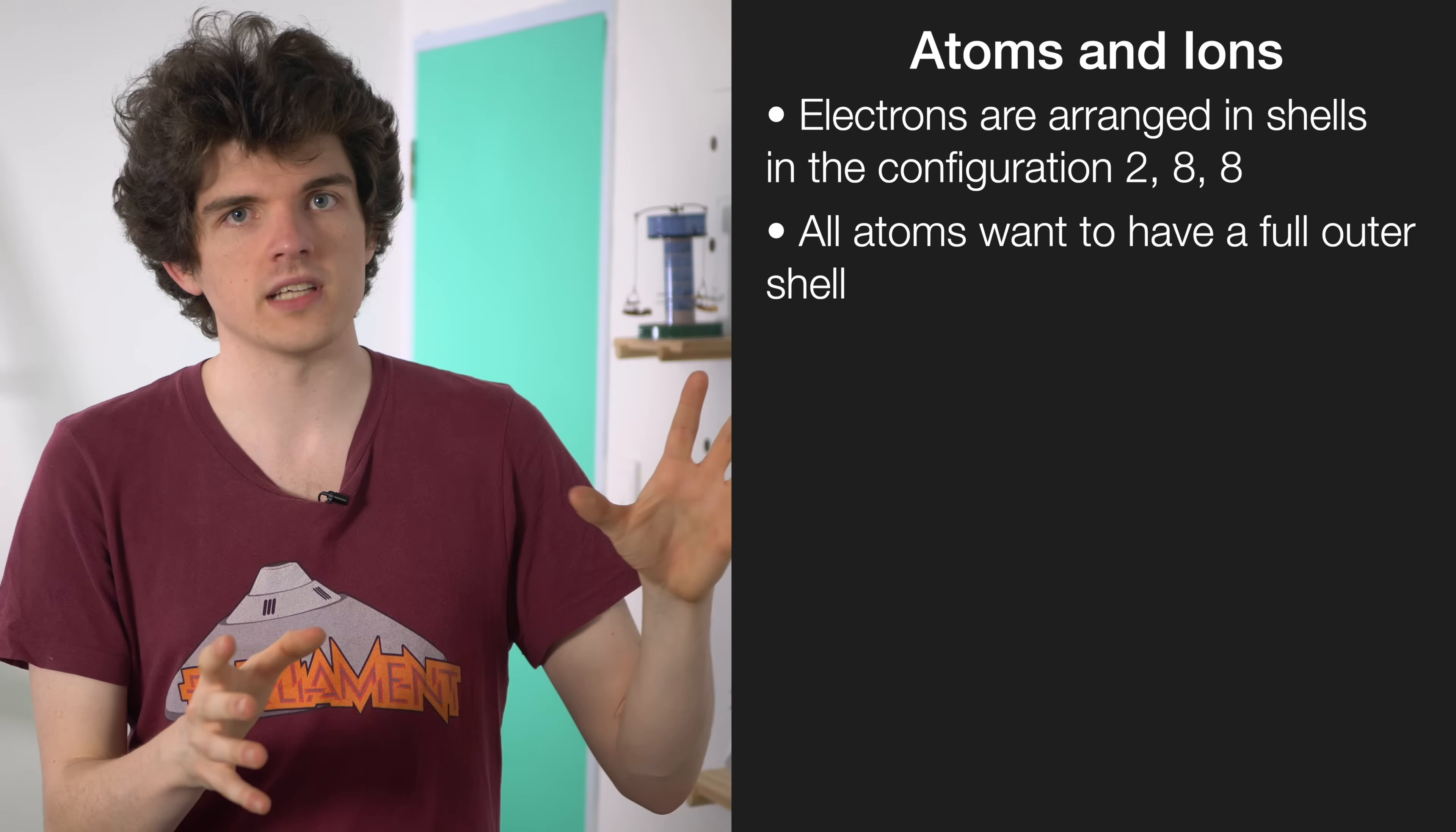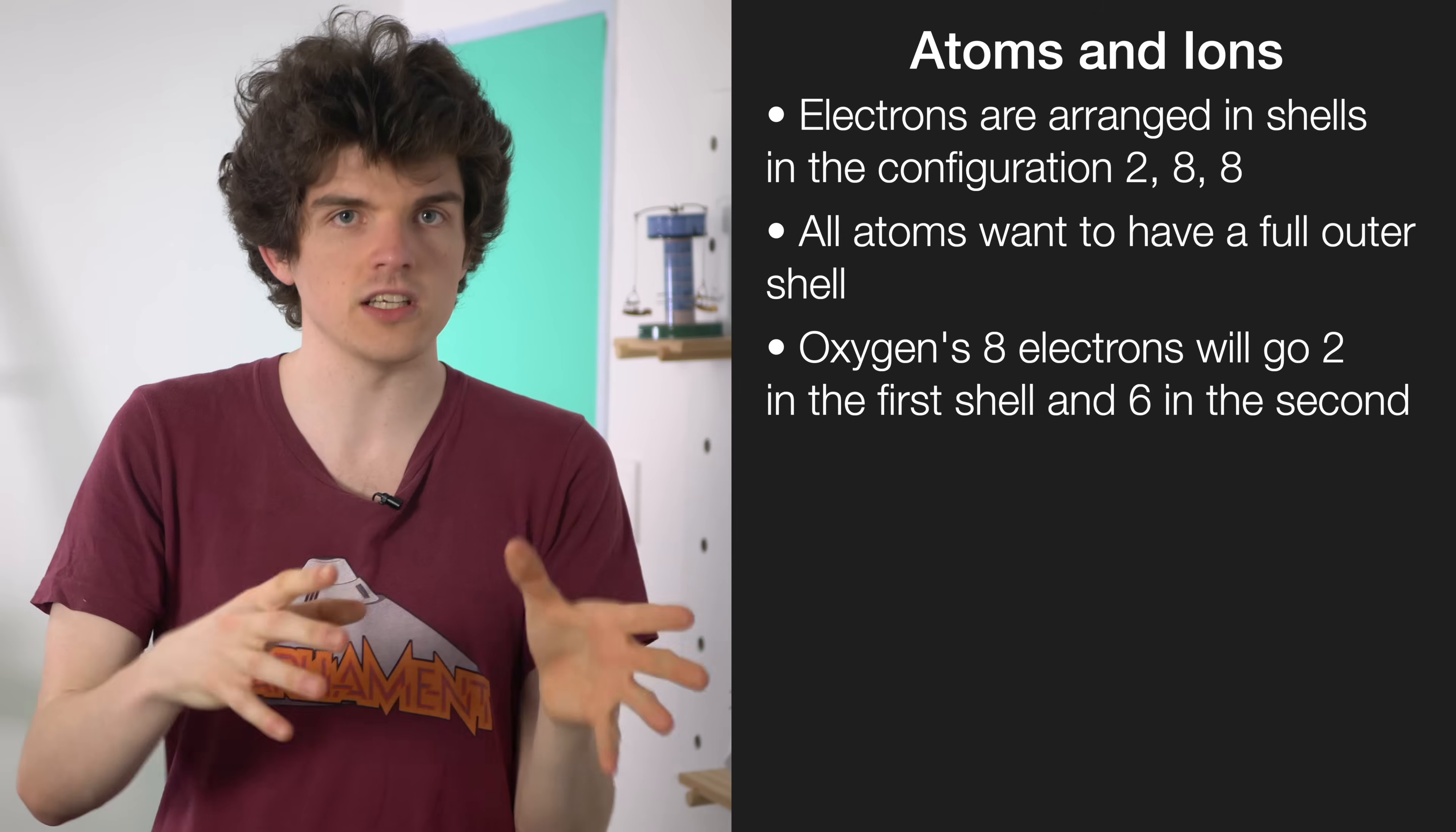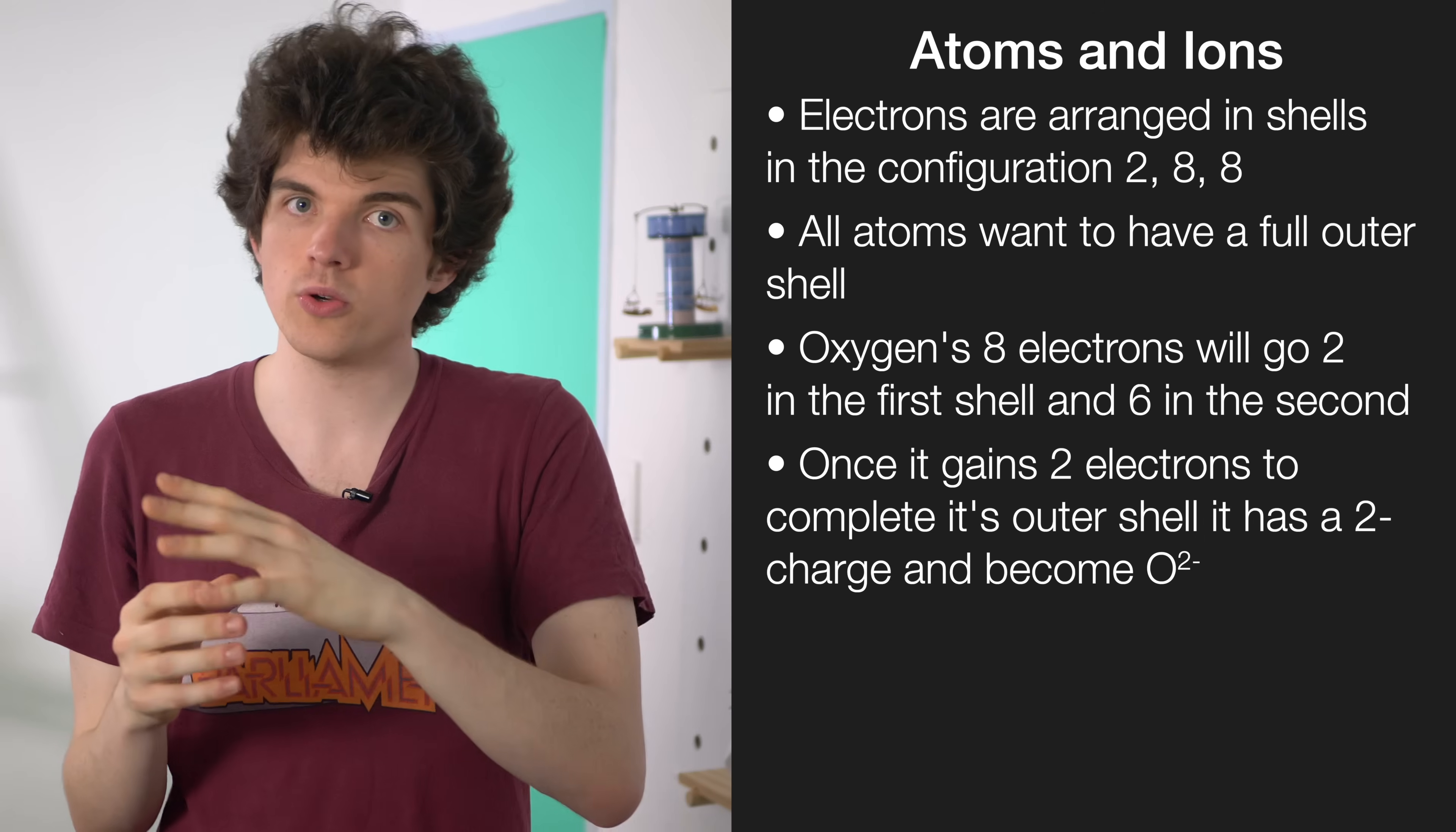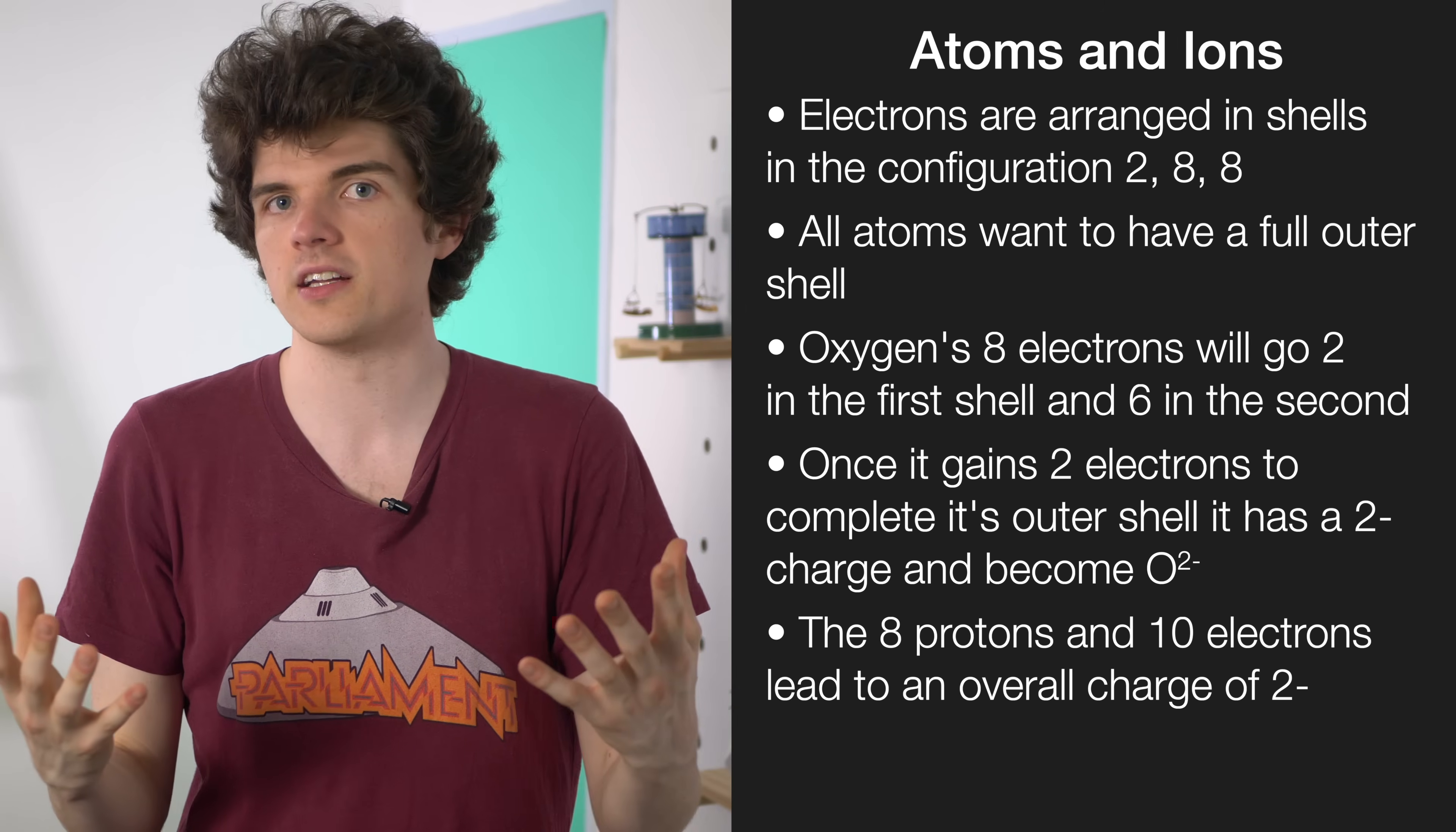Let's take oxygen for example, which has eight protons and eight electrons. Oxygen's eight electrons will go two in the first shell and then six in the second shell, which means it's missing two electrons to get that full shell stability. Once it's gained those two electrons, then it will have a charge of minus two because it has eight protons but now it has ten electrons. Eight positive charges and ten negative charges leads to an overall charge of minus two.